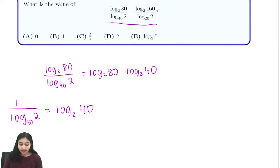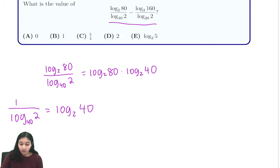Now let's look at the second part of our expression. We want to rewrite it in a similar fashion. So we have log base 2 of 160 over log base 20 of 2. And again, we know that 1 over log base 20 of 2 is equal to log base 2 of 20. So this is just equal to log base 2 of 160 times log base 2 of 20.